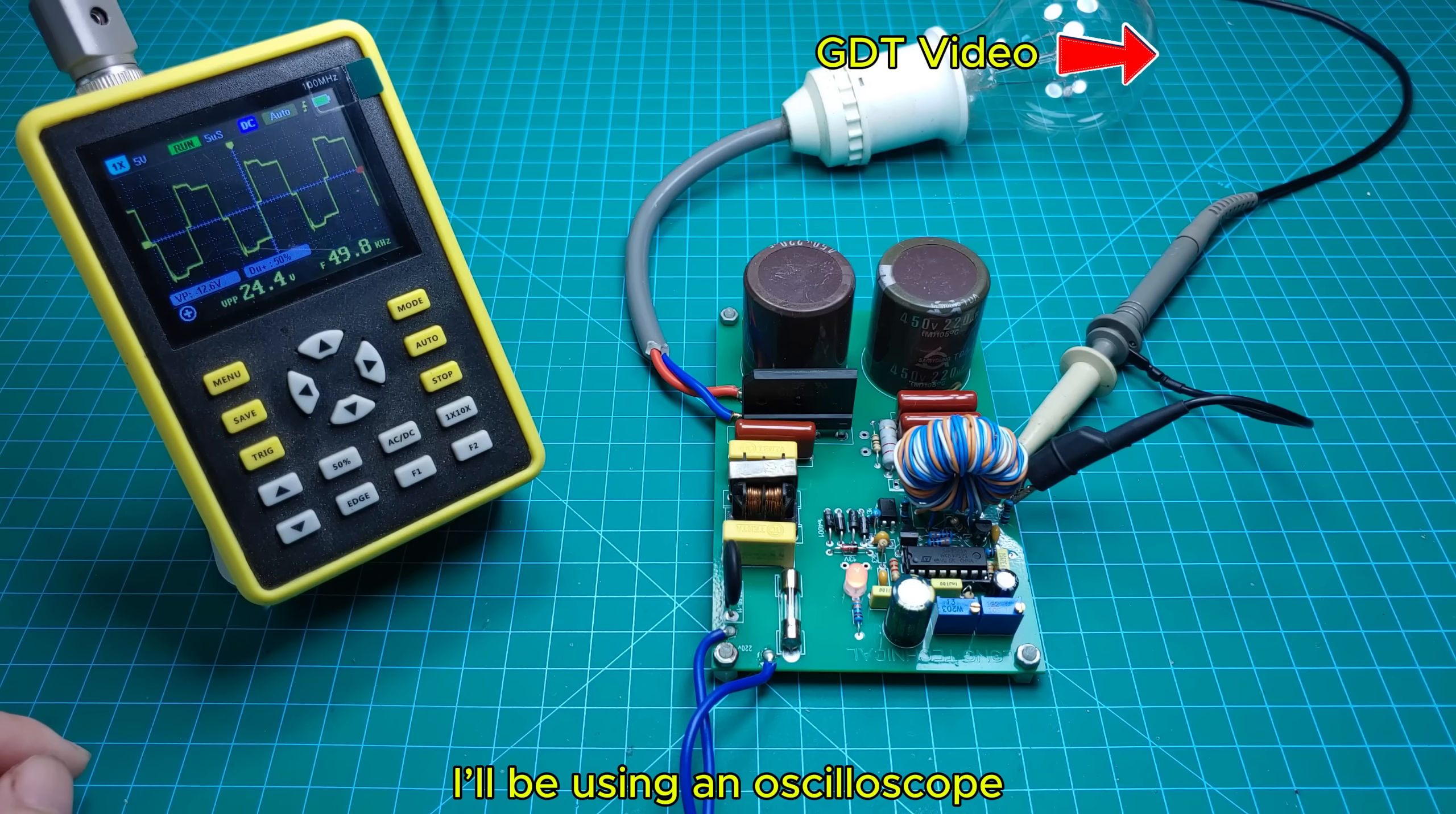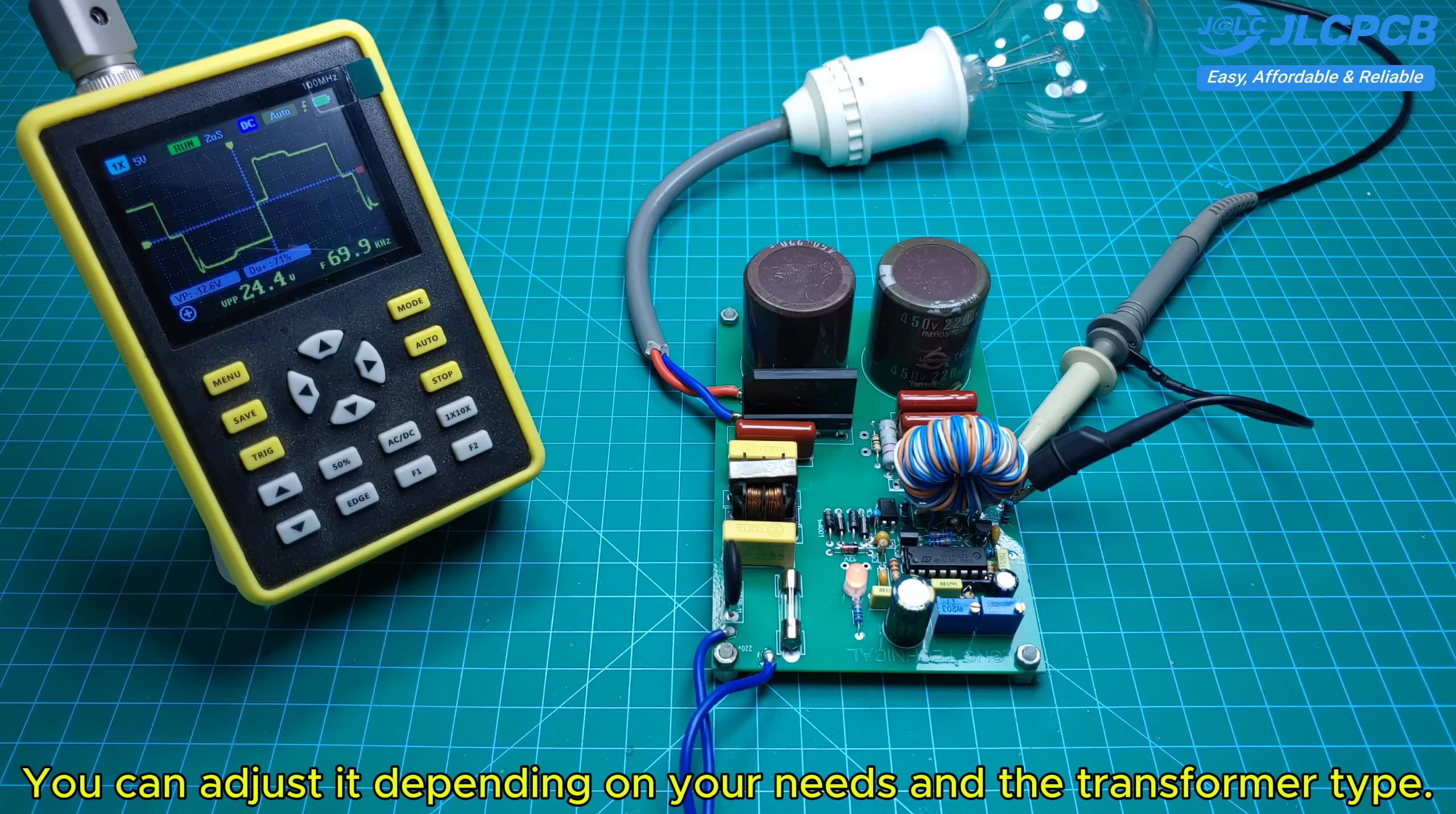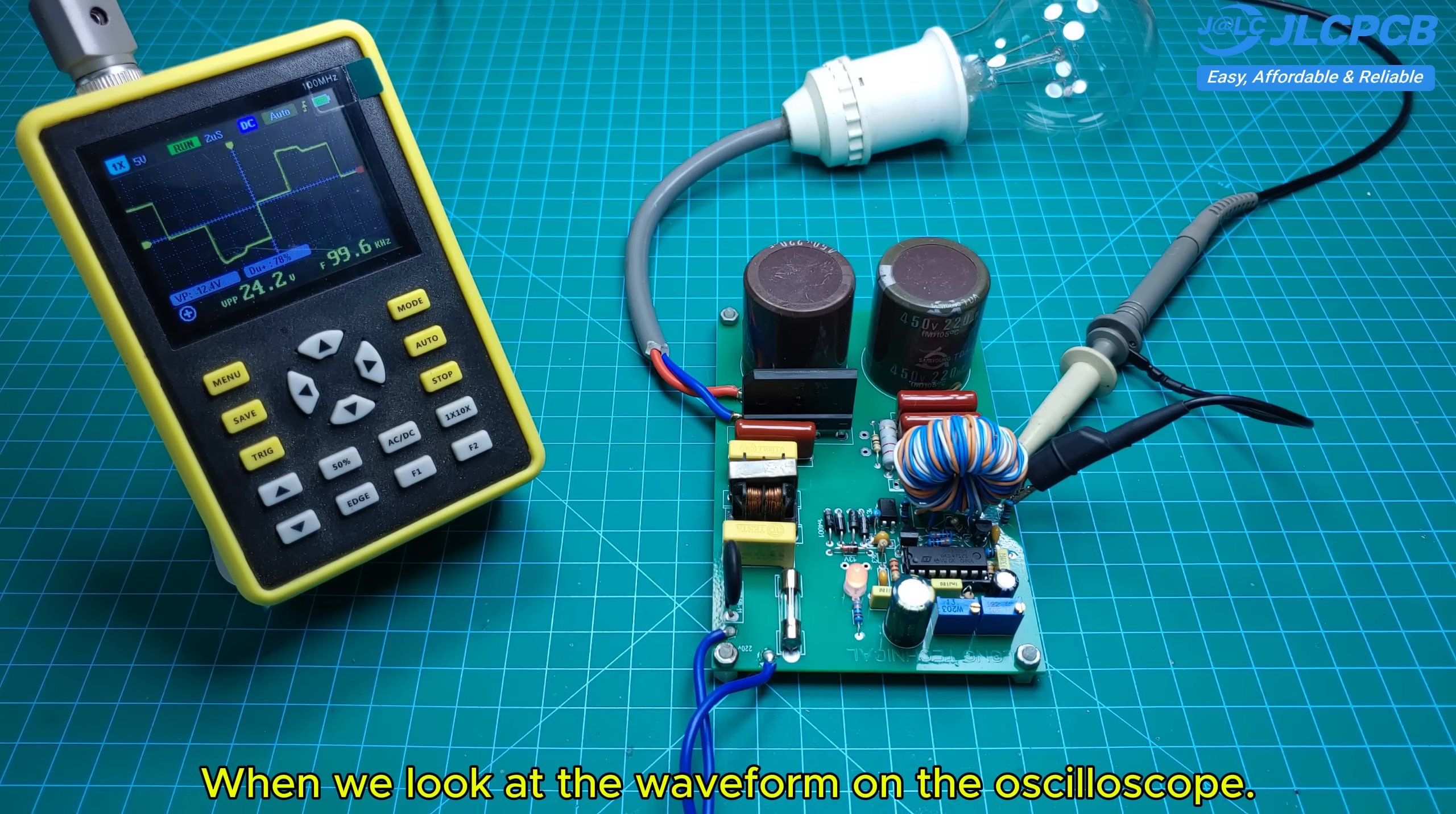I'll be using an oscilloscope so you can see the waveform after the GDT. I've chosen a switching frequency of around 50 kilohertz, but you can adjust it depending on your needs and the transformer type. This circuit also includes a soft start function, and you'll clearly see how it works when we look at the waveform on the oscilloscope.